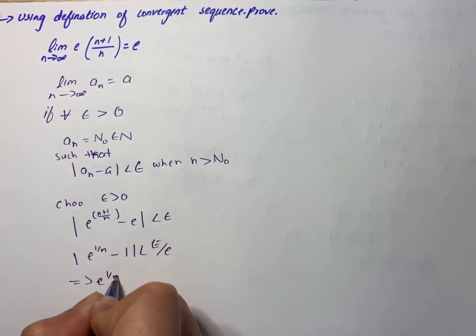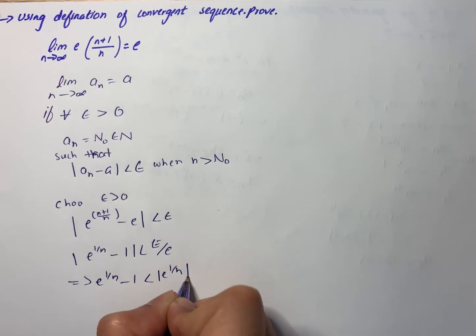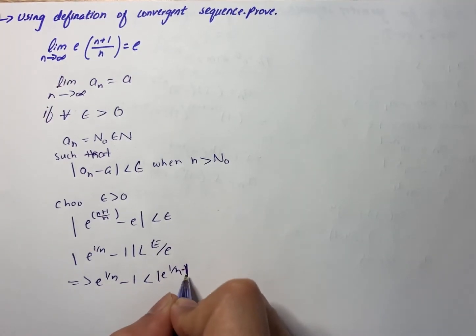On further simplification, we have e^(1/n) - 1 less than epsilon/e. Here it's minus 1, please note it.